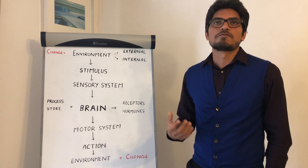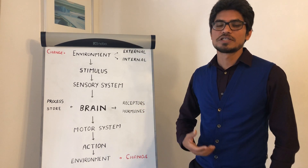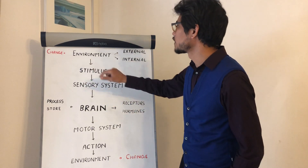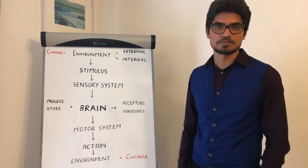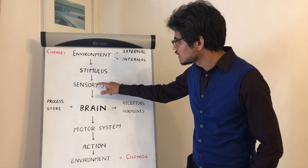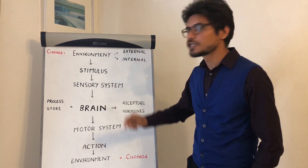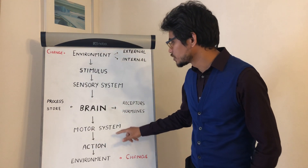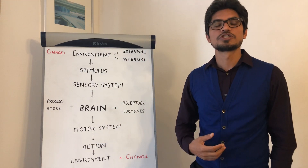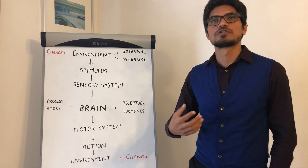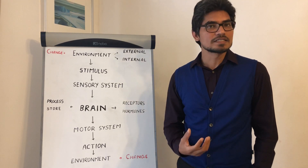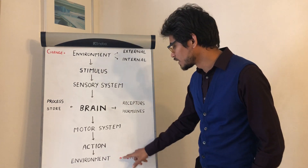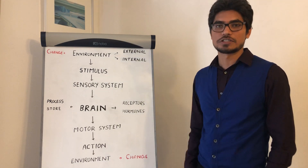Suppose you are feeling hungry — this is a change in your internal environment. This change is again sensed by the sensory system, which relays information to the brain. Then there is an action through the motor system, and there is a change in the environment — for example, we eat something so that our blood glucose rises, creating a change in our internal system.